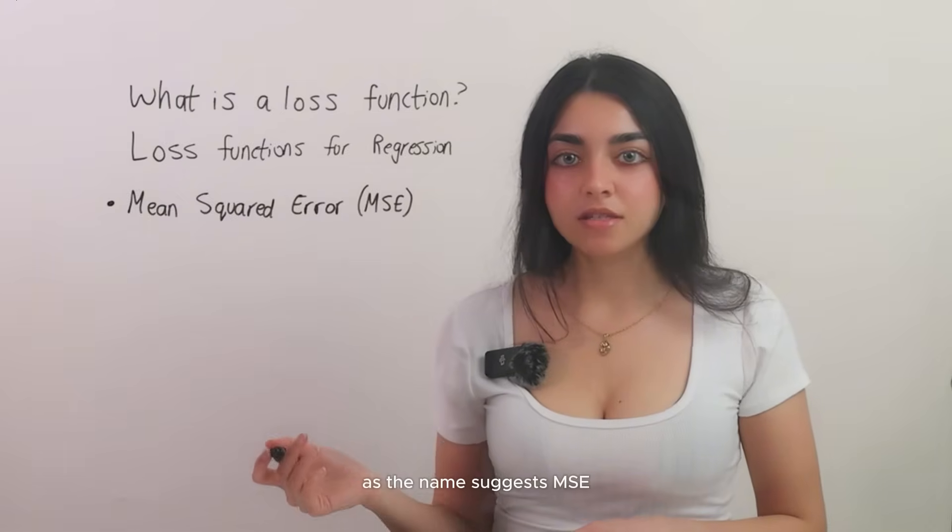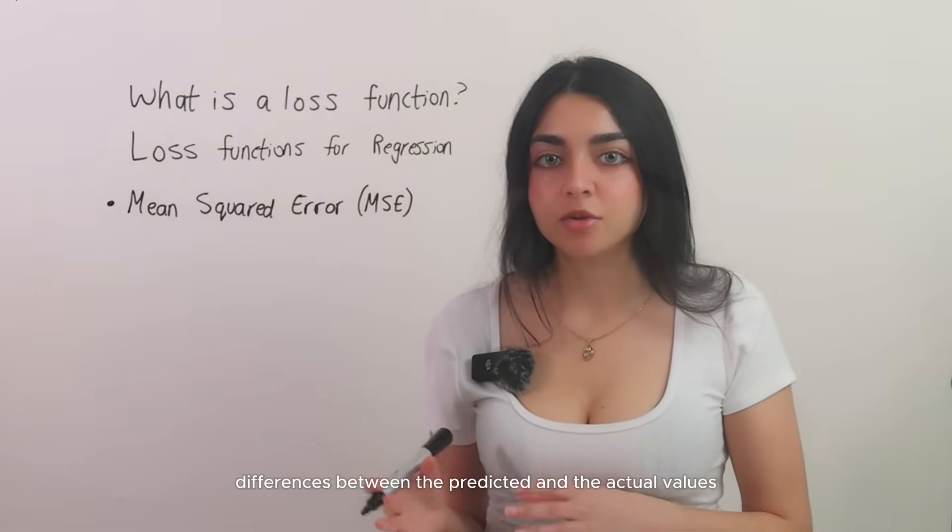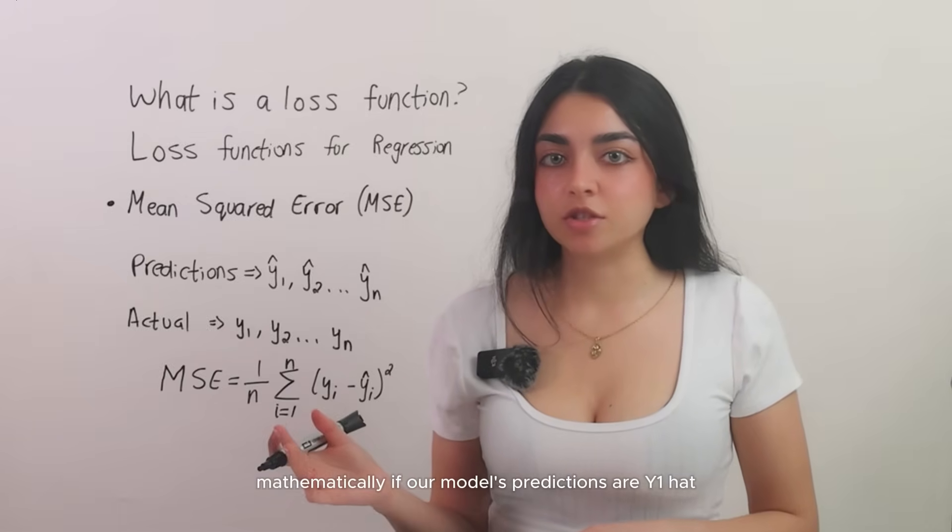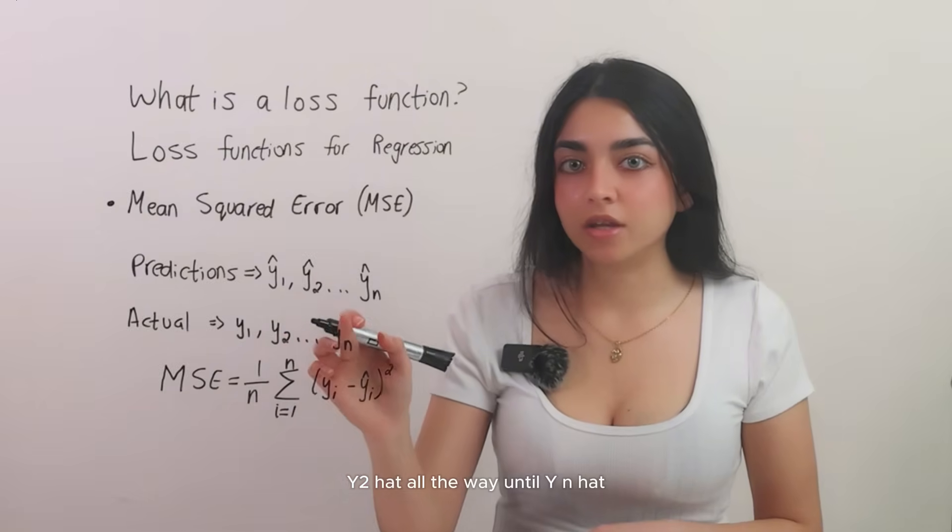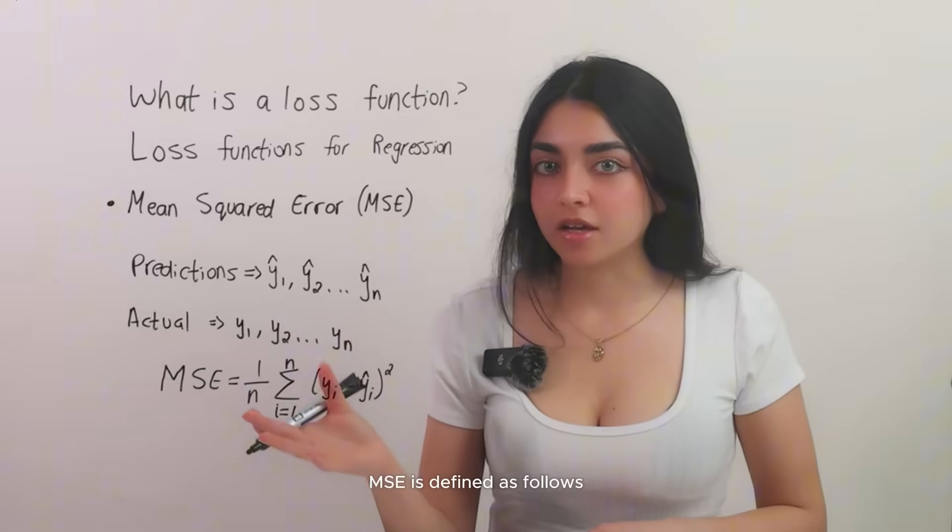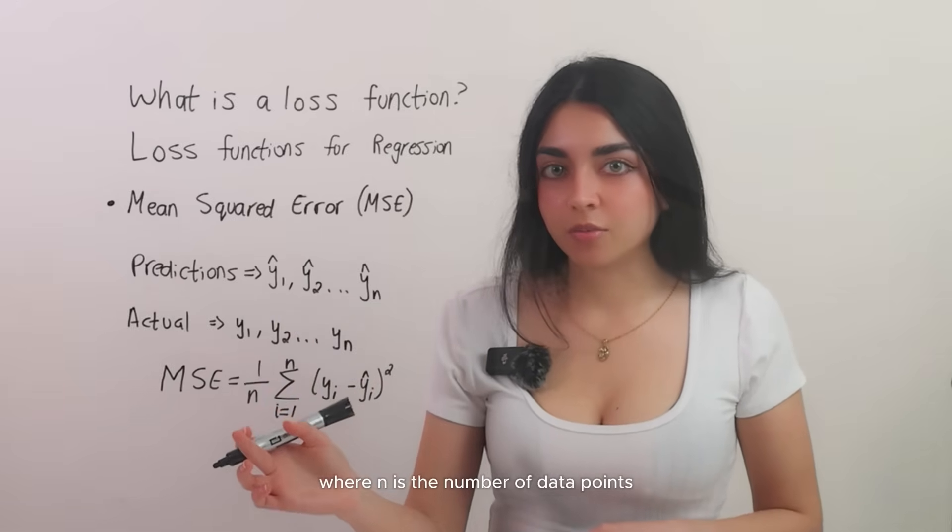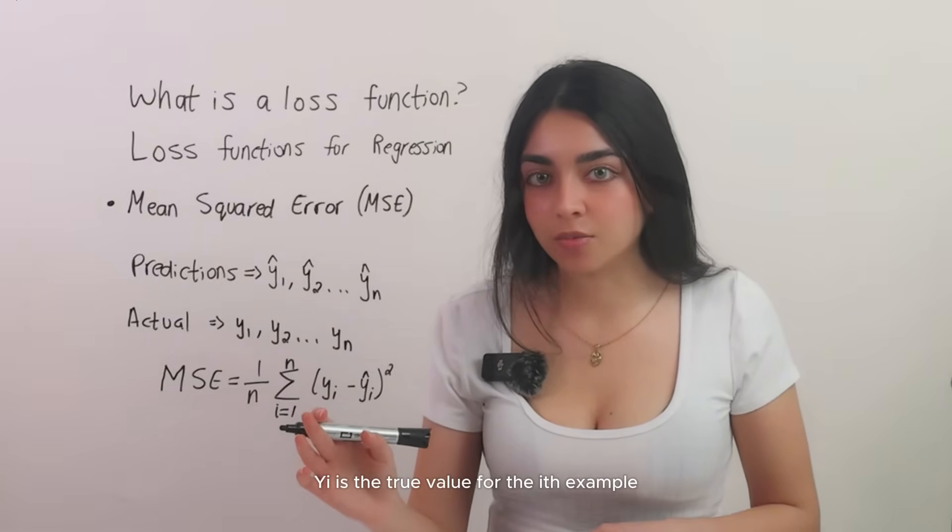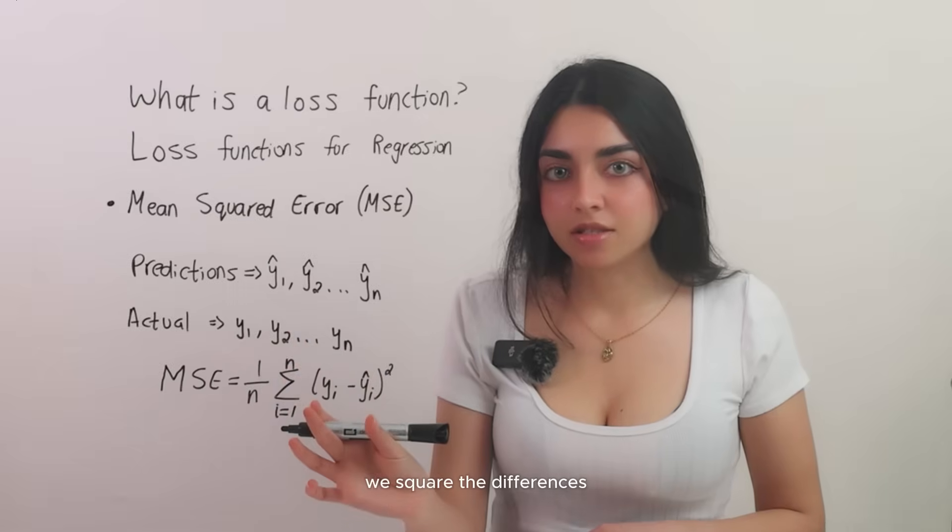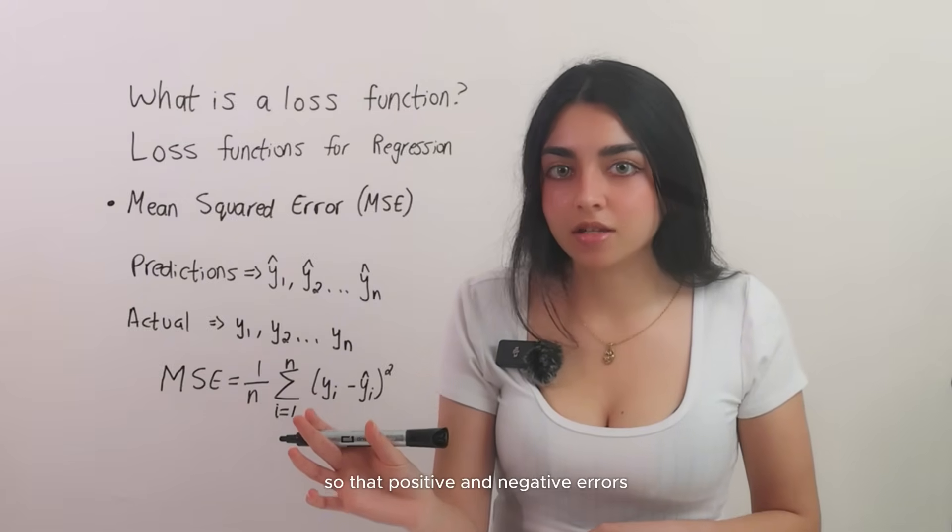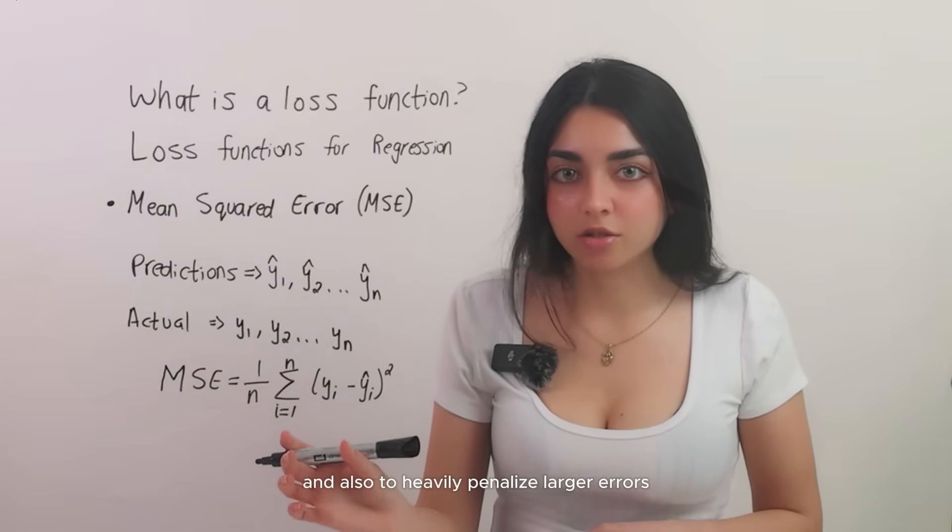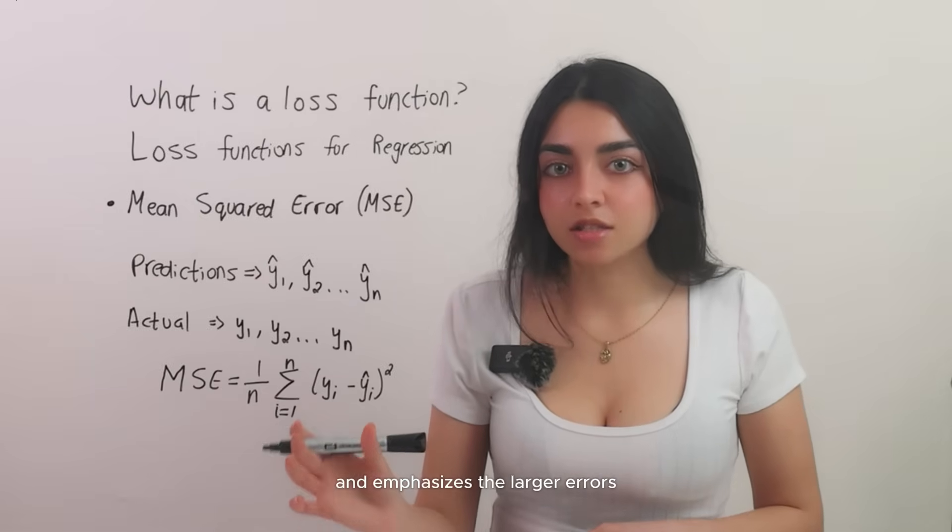As the name suggests, MSE is the average of the squared differences between the predicted and the actual values. Mathematically, if our model's predictions are y1 hat, y2 hat, all the way until yn hat, and the true values are y1 to yn, MSE is defined as follows. Where n is the number of data points, yi is the true value for the ith example, and yi hat is the predicted value for that example. We square the differences yi minus yi hat squared so that positive and negative errors don't cancel each other out, and also to heavily penalize larger errors. Squaring makes every error positive and emphasizes the larger errors.